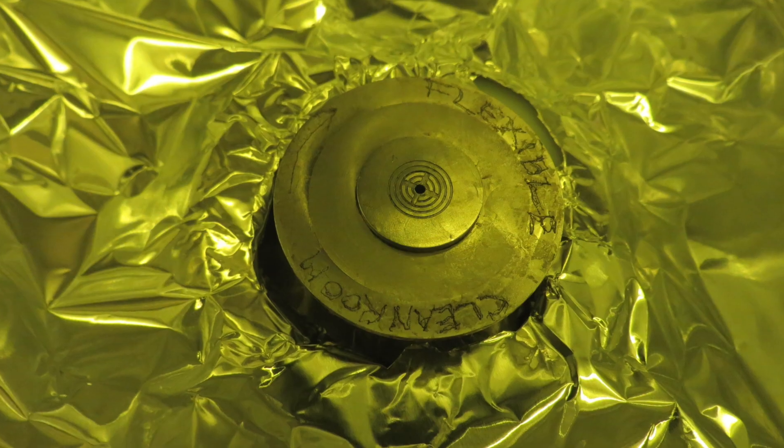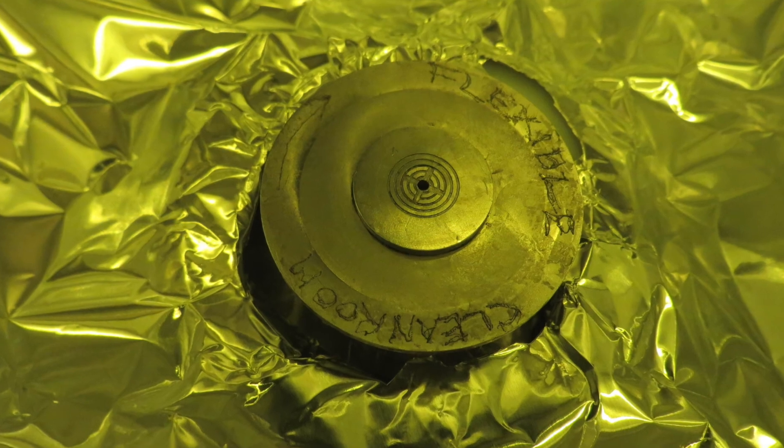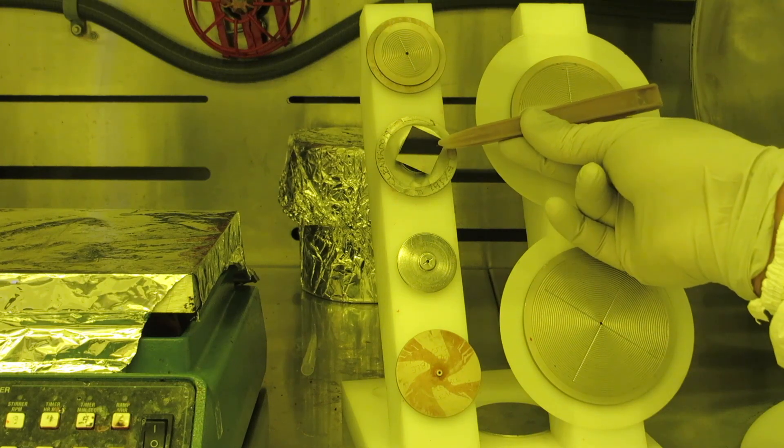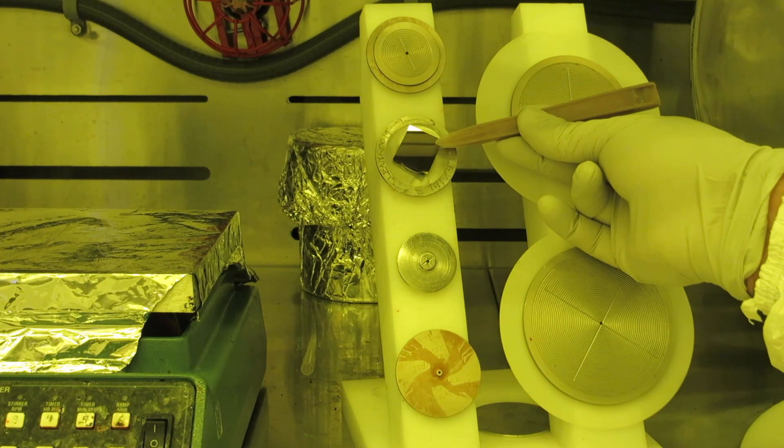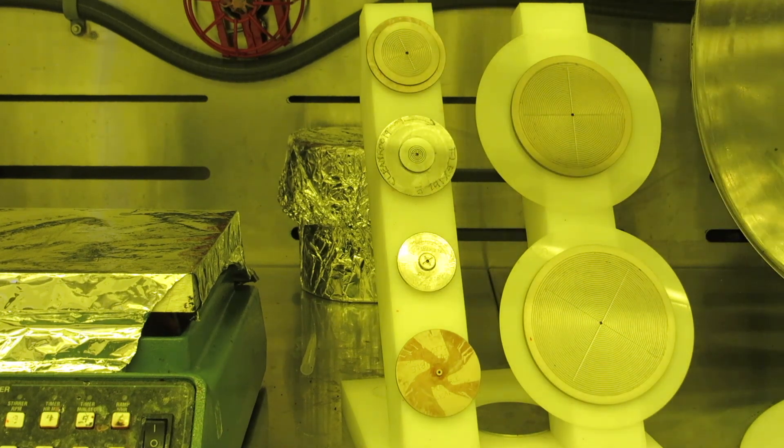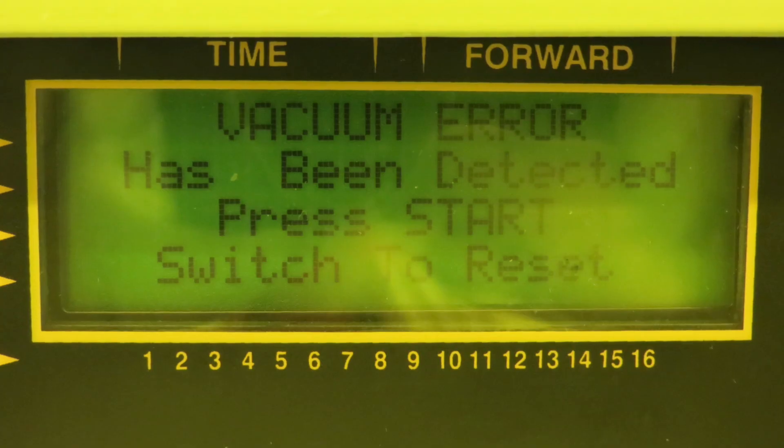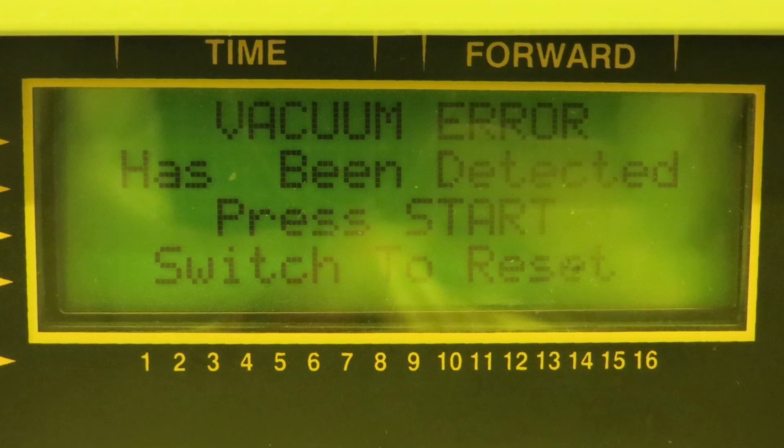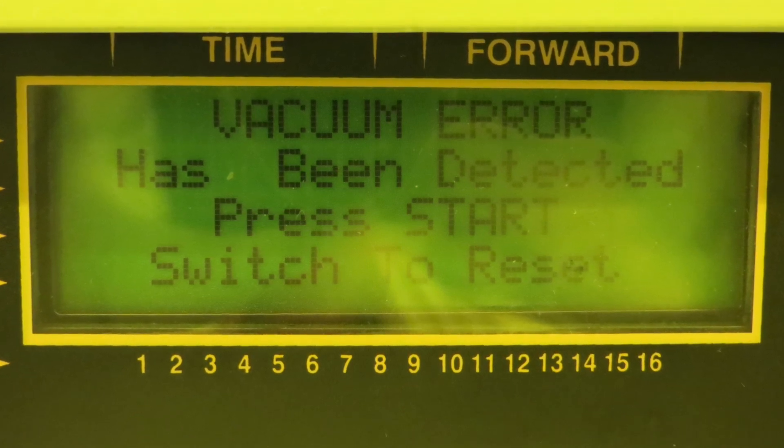An easy way to verify if the vacuum circuit is working properly is to place your gloved finger lightly over the top of the spinner shaft to plug up that hole. Then hit the green button to start spinning. If it does not spin after a few seconds, press a little harder with your finger to create a better seal.